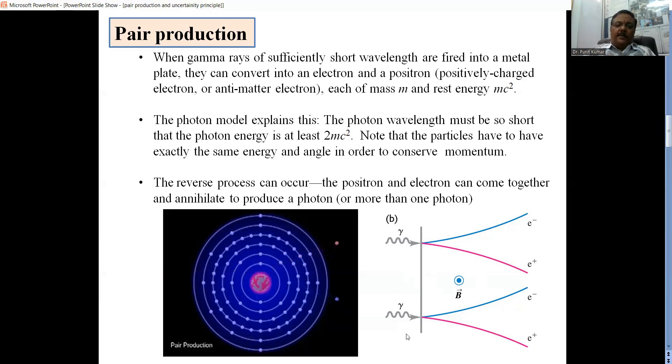We can have the reverse. If we apply a magnetic field, we can achieve the reverse. We bombard the metal with two particles, electron and positron, and we can get a gamma-ray photon. This process is called annihilation. The electron and the positron annihilate to give a gamma-ray photon.